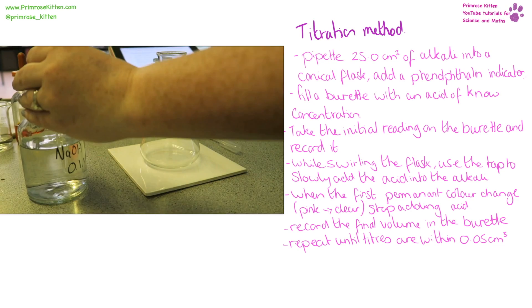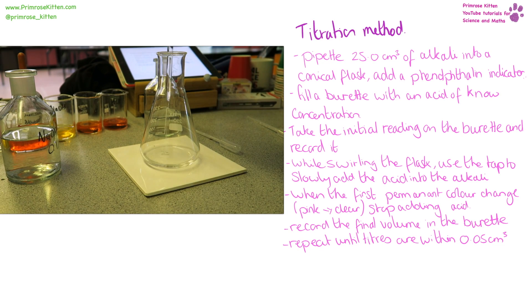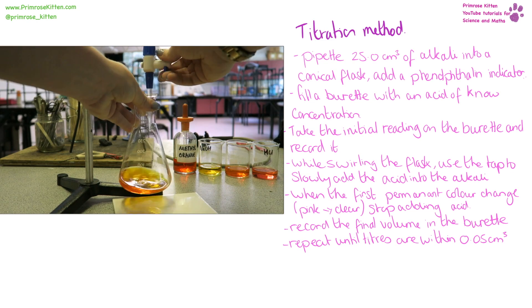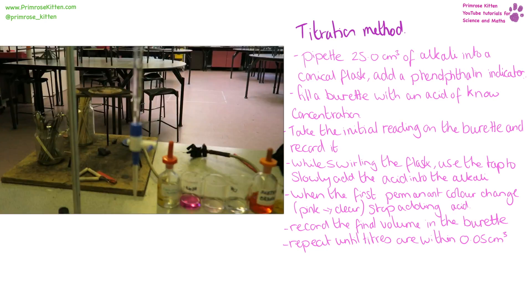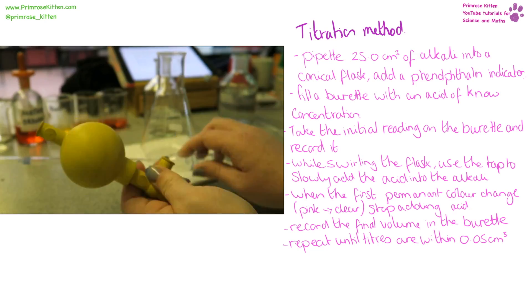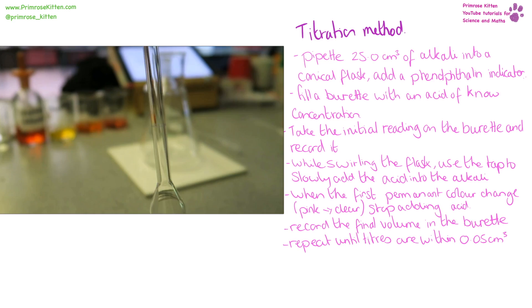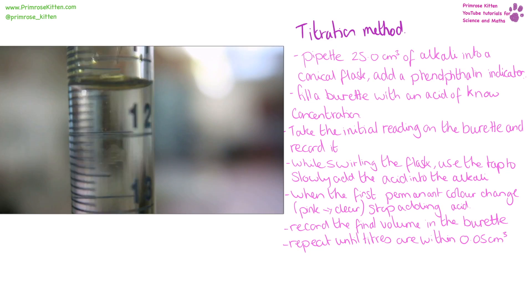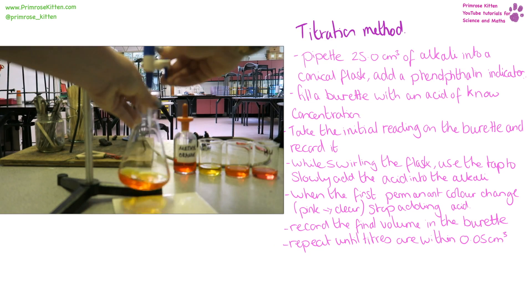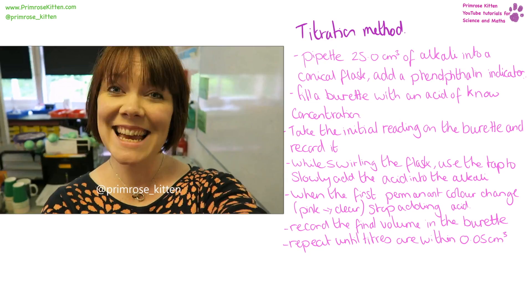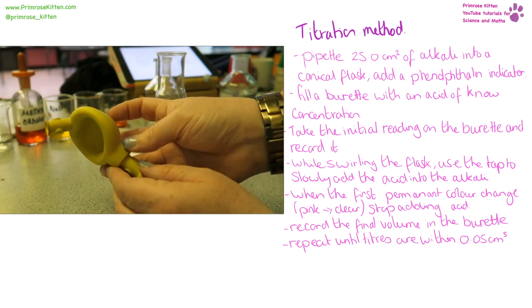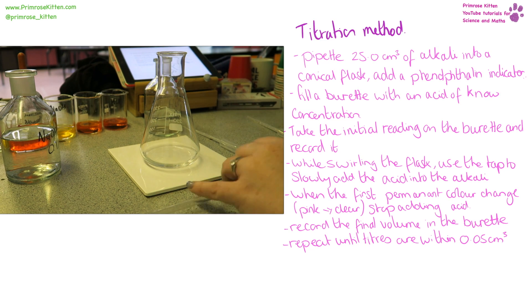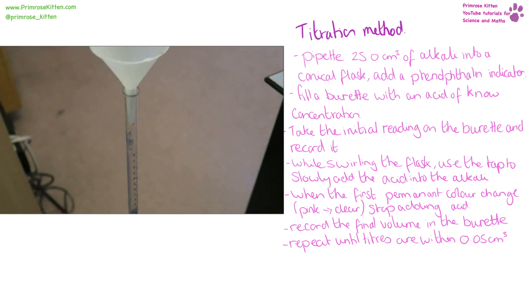To carry out a titration, first of all you need to put 25 cm cubed of an alkali into a conical flask. Add a phenolphthalein indicator or an indicator like methyl orange. Fill a burette with an acid of a known concentration. Take the initial reading on the burette and record it. And while swirling the flask, use the tap to slowly add, drop by drop, the acid into the alkali. When the first permanent color change happens, pink to clear for phenolphthalein, stop adding that acid. Record the final volume in the burette and repeat titres until you get it within 0.05 cm cubed.